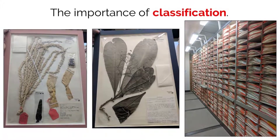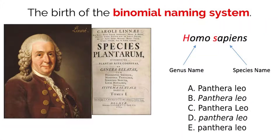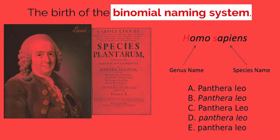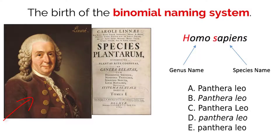In order to provide consistency among taxonomists, which are scientists that classify and group organisms, there is one method of naming that all scientists use. This binomial naming system was created by Carl Linnaeus, a Swedish botanist who lived in the 18th century.